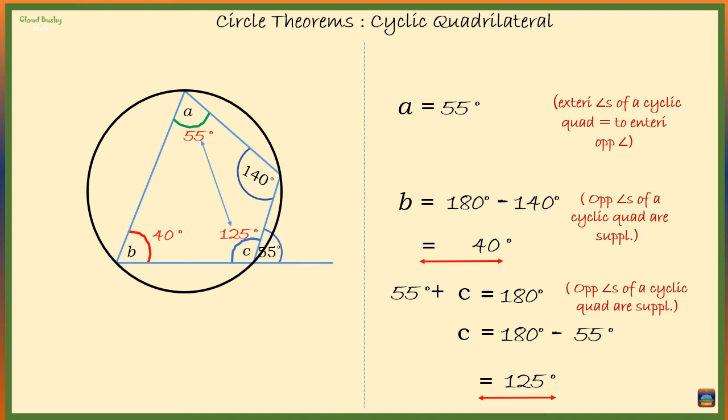Another way to find C is to consider that C and the angle adjacent to it, which is marked 55 degrees, must sum up to 180 degrees because together they make a straight angle. That means C is equal to 180 degrees minus 55 degrees, which is 125 degrees.